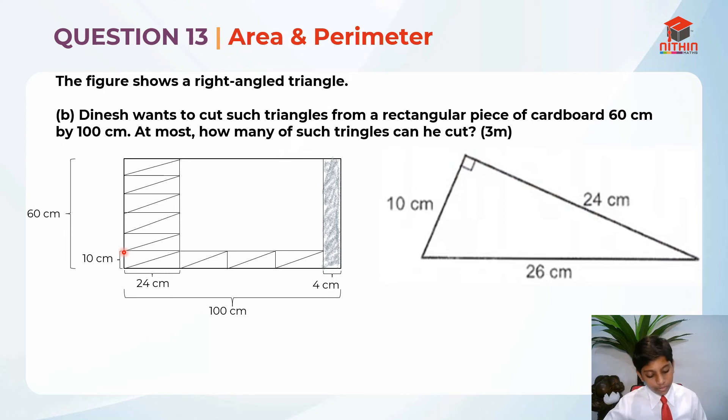First we can find how many pieces can he fit in the breadth. He can fit six pieces because 60 divided by 10 which is equal to 6. So he can fit one rectangle, two rectangle, three, four, five, six rectangles. He can fit six rectangles.